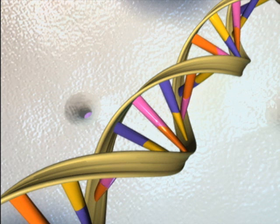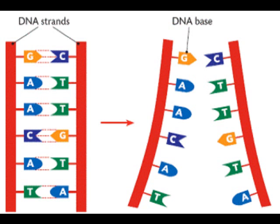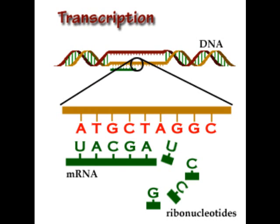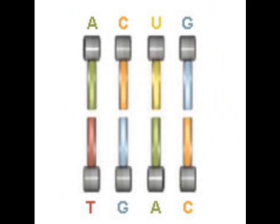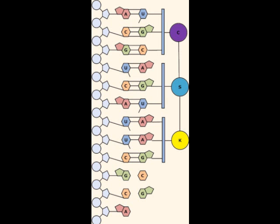Each strand is now a template. Complementary bases attach to make a copy. DNA polymerase proofreads so it's not sloppy. Transcription is copying DNA to RNA. RNA polymerase binds the DNA at the promoter, which tells RNA polymerase where to go. RNA polymerase separates DNA and uses one strand as a template. Adenine to uracil and guanine to cytosine — that's how strands of RNA are made.